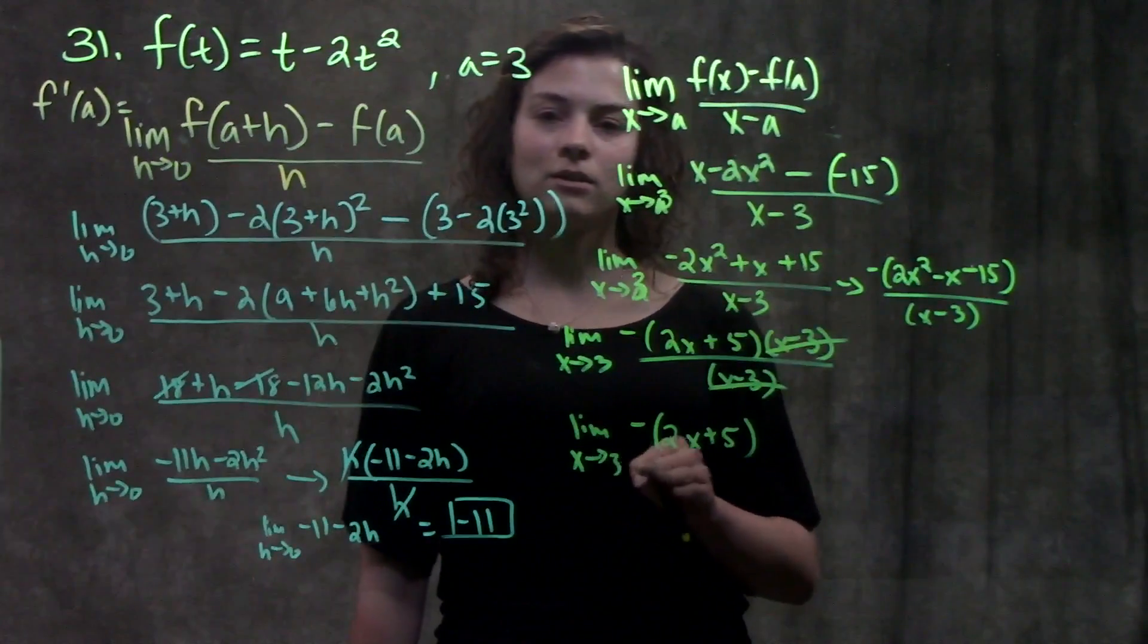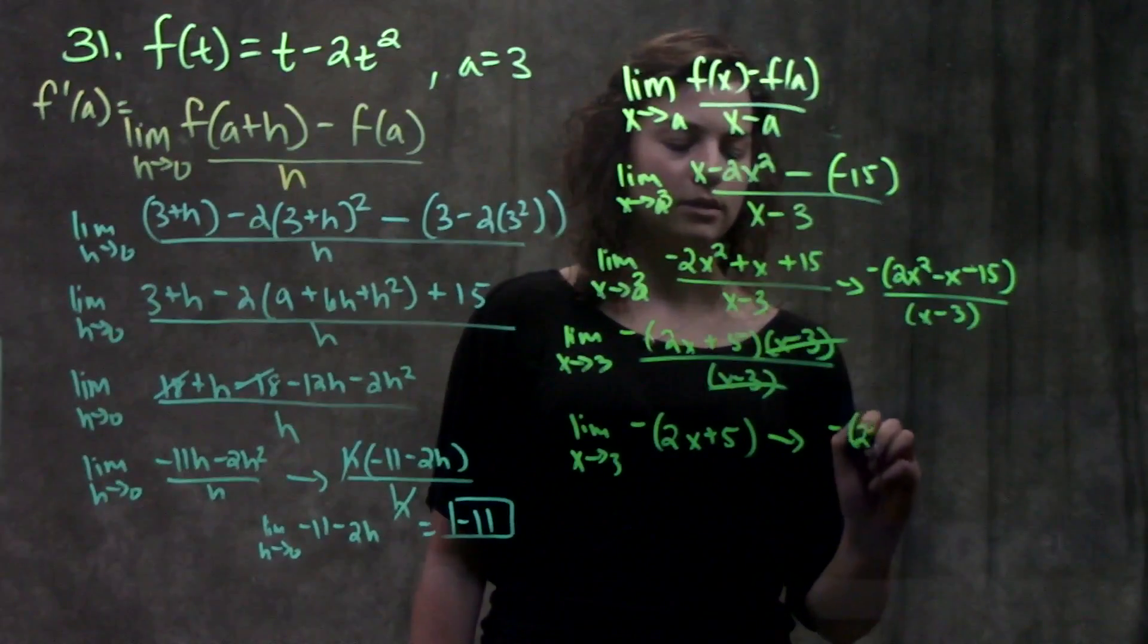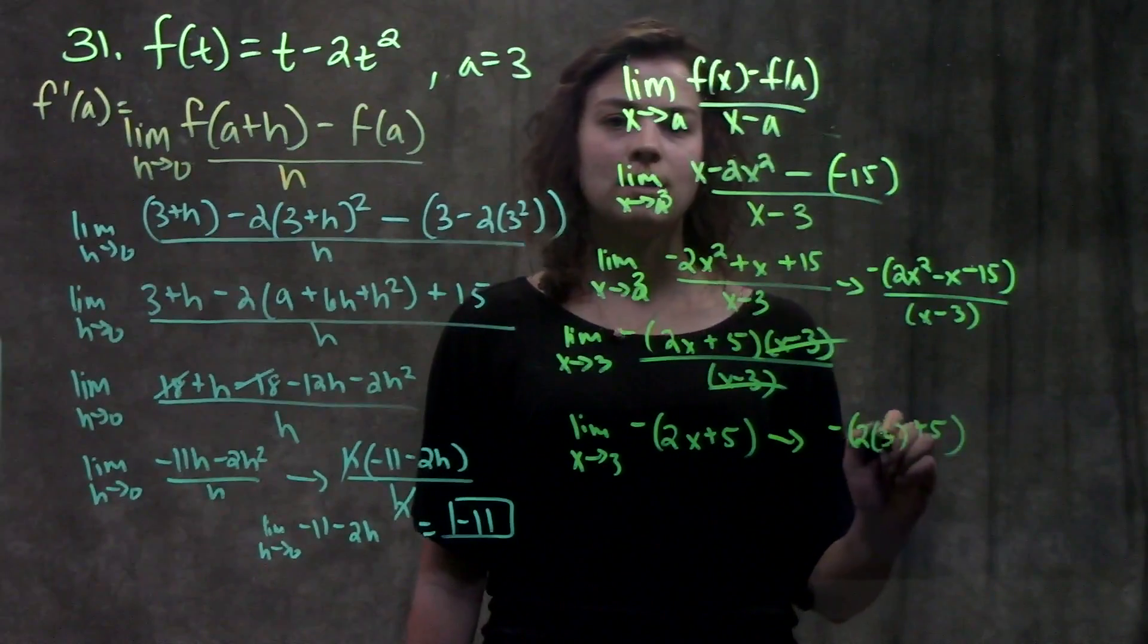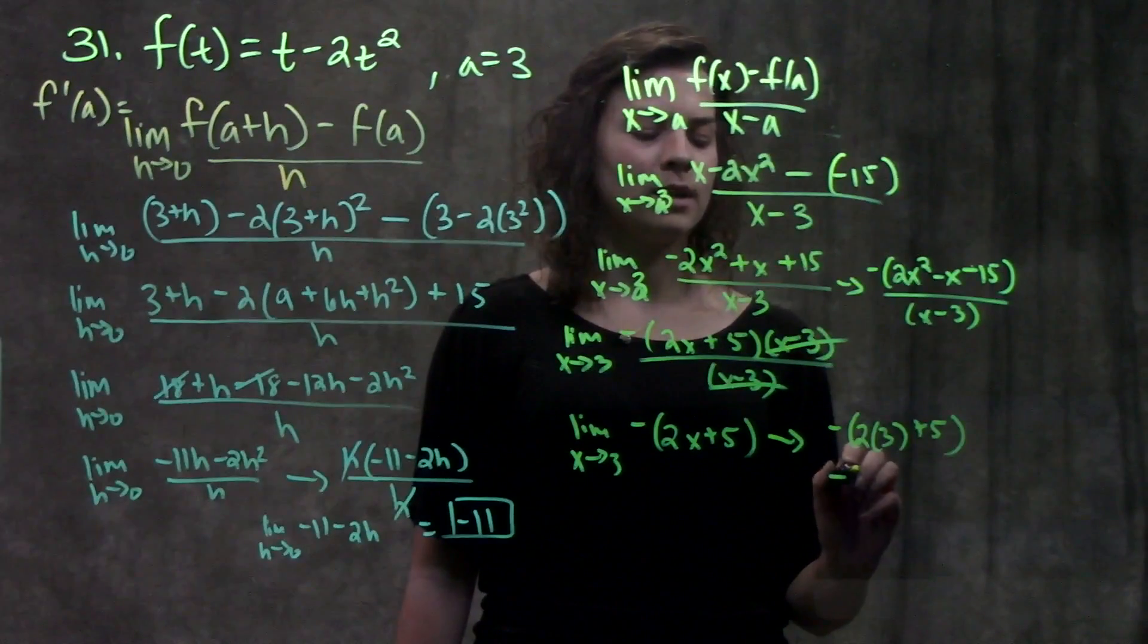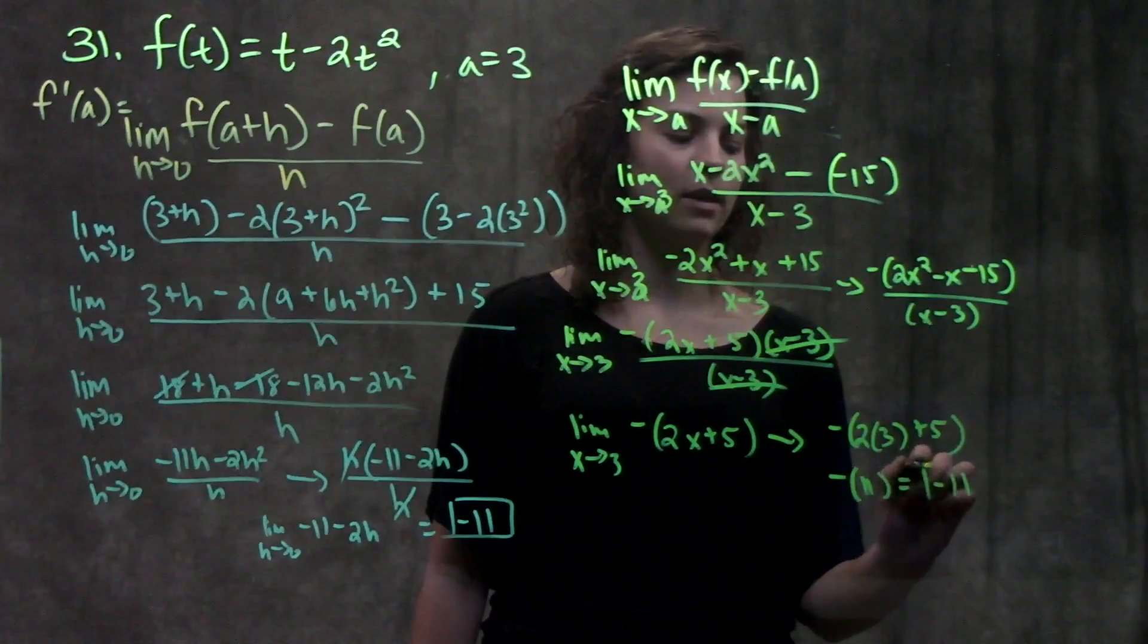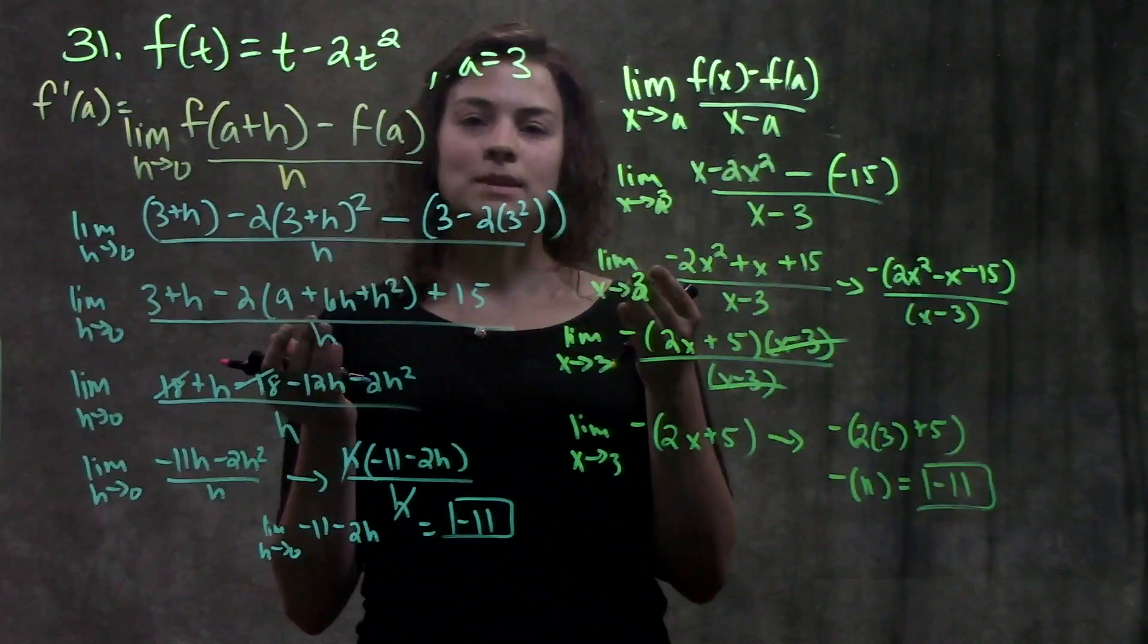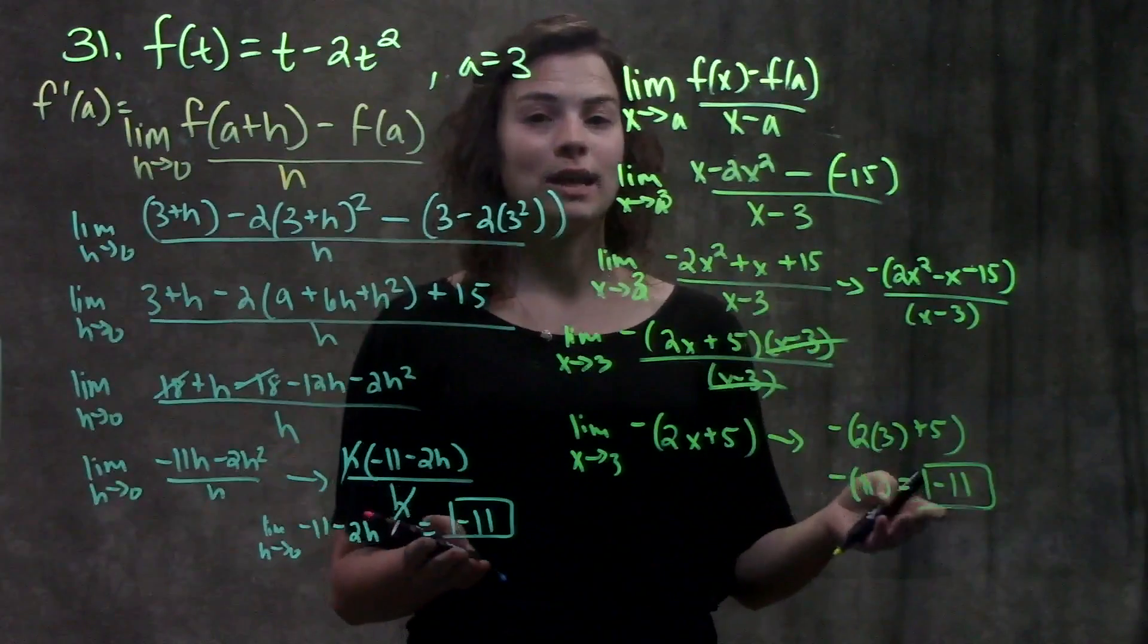Now we're left with the limit as x approaches 3 of minus times (2x plus 5). Let's plug 3 in and see what we get. When we plug 3 in for x, we get minus (2 times 3 plus 5). 2 times 3 is 6, plus 5 gives us 11. But we have the negative in front, so that just becomes minus 11. Which is what we would expect because both of these limit definitions are finding the derivative at the specific point, and so we should get the same value.